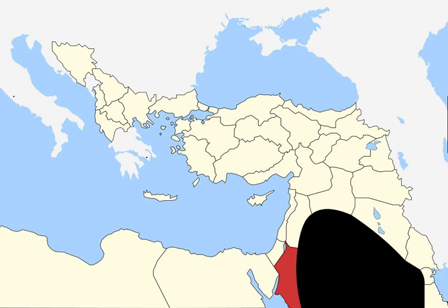2005, Amman bombings by Al-Qaeda leader Abu Musab al-Zarqawi. 2010–2012, Jordanian protests broke out as part of the Arab Spring, demanding economic and political reforms. 2014, Jordanian intervention in the Syrian civil war began on 22 September 2014, with airstrikes on Islamic State of Iraq and the Levant targets, and escalated after the murder of Mu'ath al-Kasasbeh, a captured Jordanian pilot, by ISIL in early 2015.